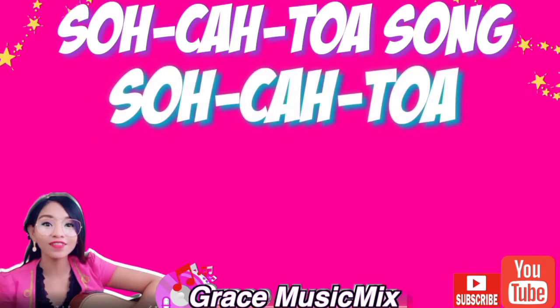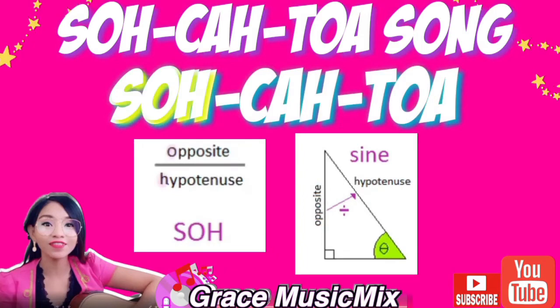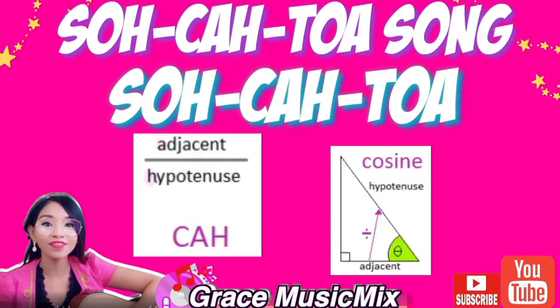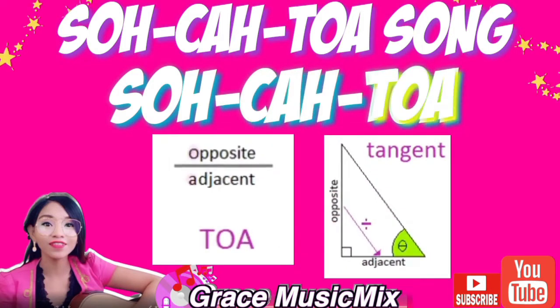SOH-CAH-TOA, SOH-CAH-TOA. Sine is opposite over hypotenuse. SOH-CAH-TOA, SOH-CAH-TOA. Cosine is adjacent over hypotenuse. SOH-CAH-TOA, SOH-CAH-TOA. Tangent is opposite over adjacent. SOH-CAH-TOA.